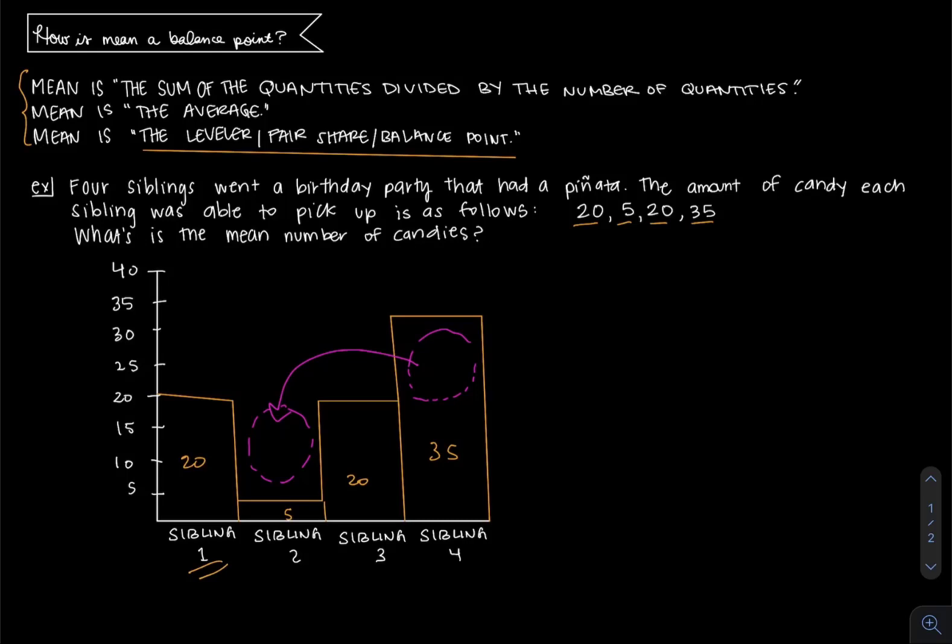So what that means is when you're making this the balance point or the leveler or fair share, this top amount right here, we would take and then input in for the second sibling.